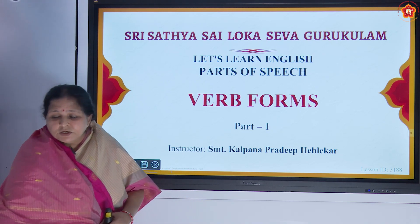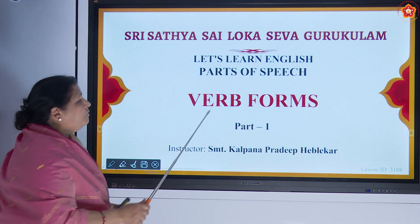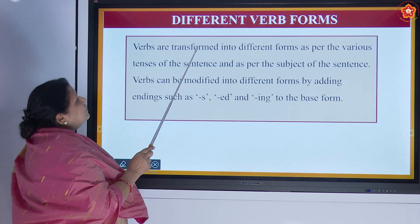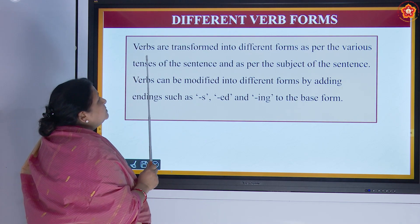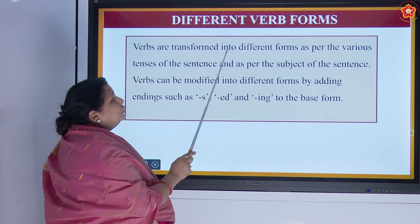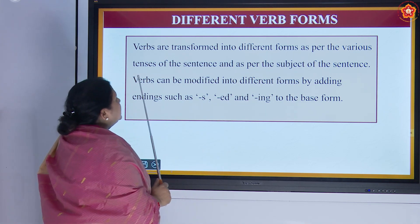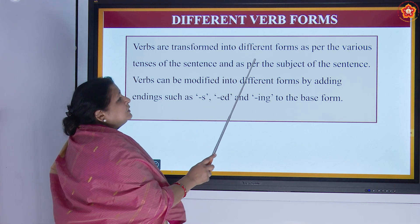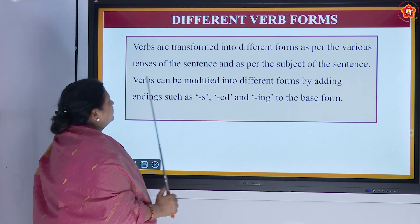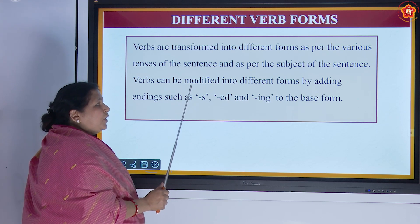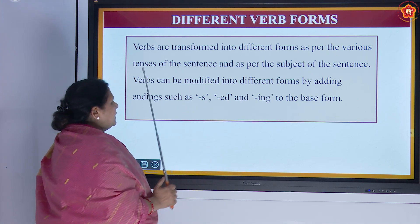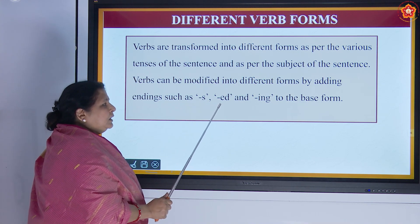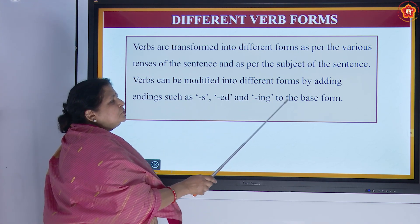Today we are going to learn about verb forms. This is part 1 of the series. Verbs are transformed into different forms as per the various tenses of the sentence and as per the subject of the sentence. Verbs can be modified into different forms by adding endings such as s, ed, and ing to the base form.